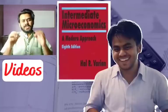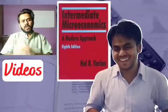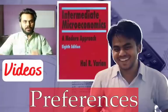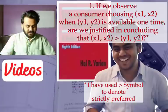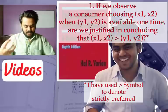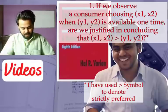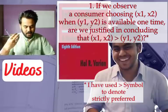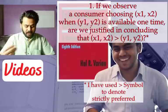Let's discuss the end-of-chapter questions of Chapter 3 of the Varian textbook. The first question says: if we observe a consumer choosing a bundle when a different bundle is available one time, are we justified in concluding that the chosen bundle is strictly preferred to the not-chosen bundle?